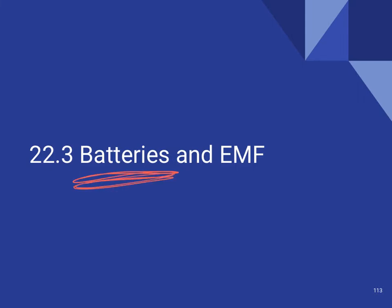In physics, we often refer to it as an EMF, which is an electromotive force. That battery or that EMF is what makes what we call electric potential — which is not covered in this class but was covered in Physics 2. It gives us the electric potential which allows the electrons to flow.